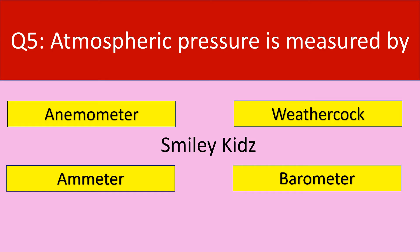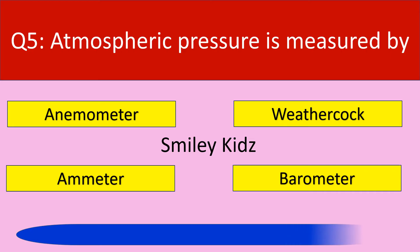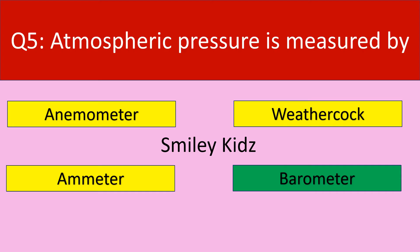Moving to question number 5. Atmospheric pressure is measured by — your options are anemometer, weather cock, emitter, barometer. The correct answer is barometer. Atmospheric pressure is measured by barometer.